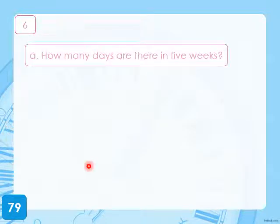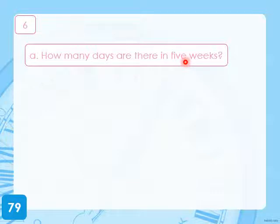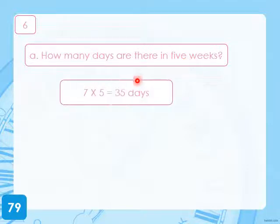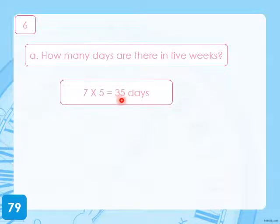Exercise 6, A: How many days are there in 5 weeks? In the previous lesson, we said that we have 7 days in a week. If we have 7 days in a week, how many days are there in 5 weeks? 7 times 5 — because we have 5 weeks — equals 35 days. There are 35 days in 5 weeks.